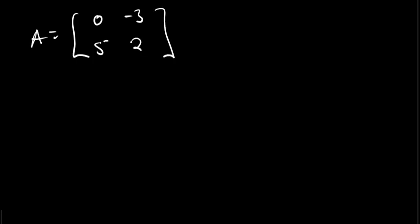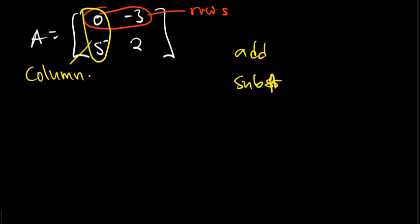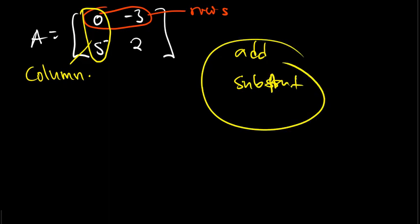A matrix has got what we call rows and columns. This is what we call rows, and this is what we call columns. Another thing I want you to understand is that you can only add or subtract a matrix which has got the same number of rows and same number of columns.